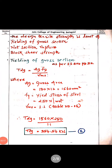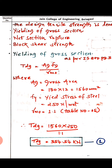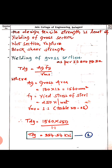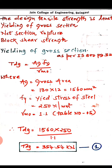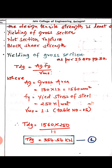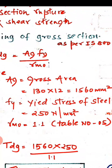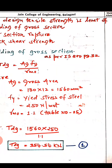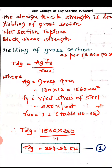The design tensile strength of a plate or member is the least of: yielding of gross section, net section rupture, and block shear strength. For yielding of gross section, as per IS 800 page 32, the equation is Tdg = Ag × fy / γm0, where Ag is the gross area (130 × 12 mm). The member can take 354.54 kN while yielding of the gross section.